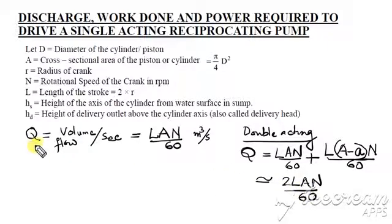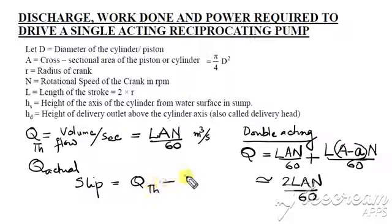This is the theoretical discharge. If the actual discharge of the pump is Q-actual, it may not be the same as Q-theoretical. What we normally expect is Q-actual to be less than Q-theoretical. In that case, we introduce a term called slip, which is essentially Q-theoretical minus Q-actual.